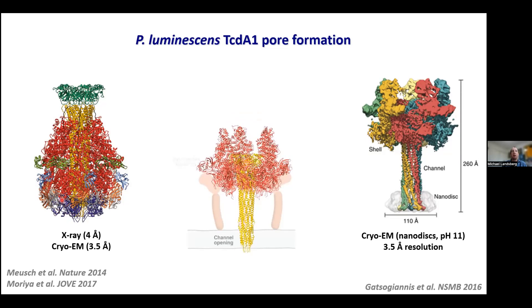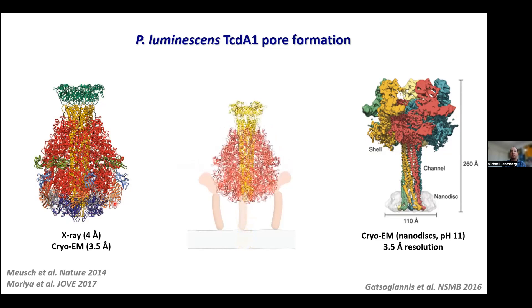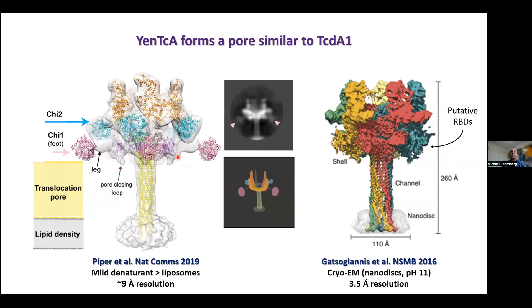Comparing the Photorhabdus toxin complex structure with our NtC structure, the chitinases sit in a region that likewise suggests involvement in receptor recognition. The relative location of putative RBDs in Photorhabdus and the location of chitinases in our NtC structure are similar, so we asked whether these chitinases might be facilitating receptor recognition events leading to association with a predefined membrane surface.